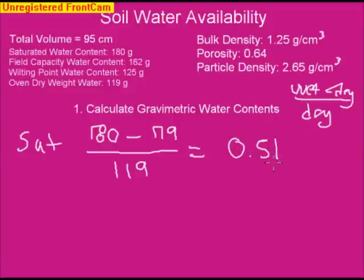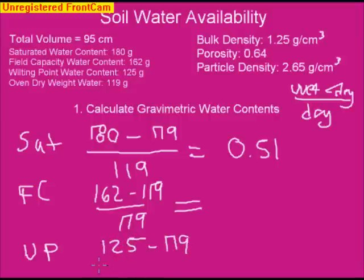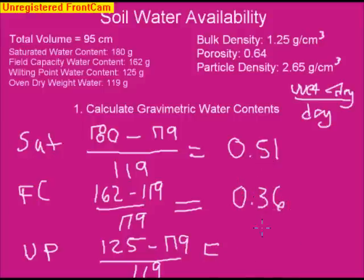Gravimetric water content at saturation is 0.51. At field capacity, it's 162 minus 119 divided by 119, which equals 0.36, or 36% water. For wilting point, it's 125 minus 119 divided by 119, giving 0.05. We can assume oven dry moisture content is zero.